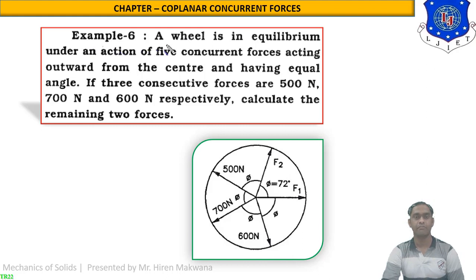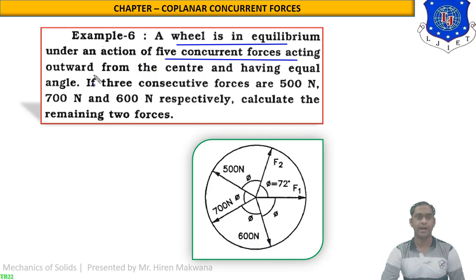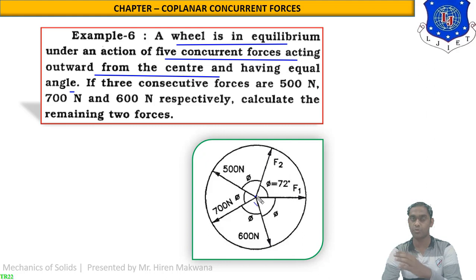What is given in the data is that a wheel is in equilibrium. Now what is equilibrium? In yesterday's lecture I told you that equilibrium means sigma H equal to zero, sigma V equal to zero, and resultant is also equal to zero. Now, under the action of five concurrent forces acting outward from the center and having equal angle, this is the center of the wheel, and there are five concurrent forces acting outward from the center.